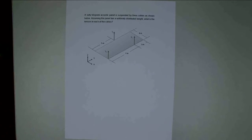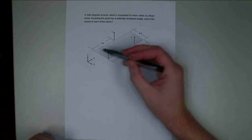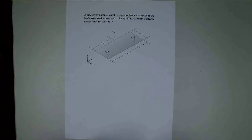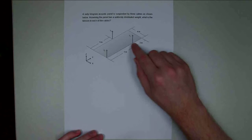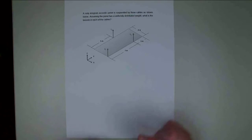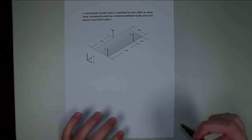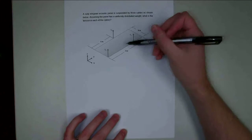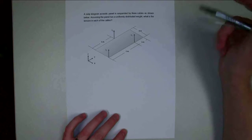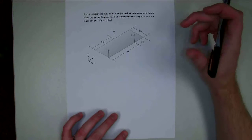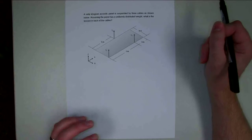For this problem, we have a 60-kilogram acoustic panel — kind of a rectangular shape — suspended by three cables with tension one, tension two, and tension three, as shown below. Assuming the panel has a uniformly distributed weight, meaning the gravity force is acting at the center of the panel, we want to determine the tension in each of these three cables.